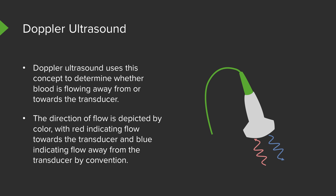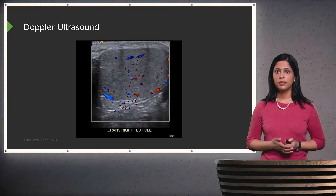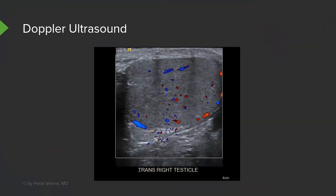This is done by convention. This is an example of Doppler ultrasound showing flow within the right testicle. You can see areas of blue and areas of red, demonstrating flow in both directions.